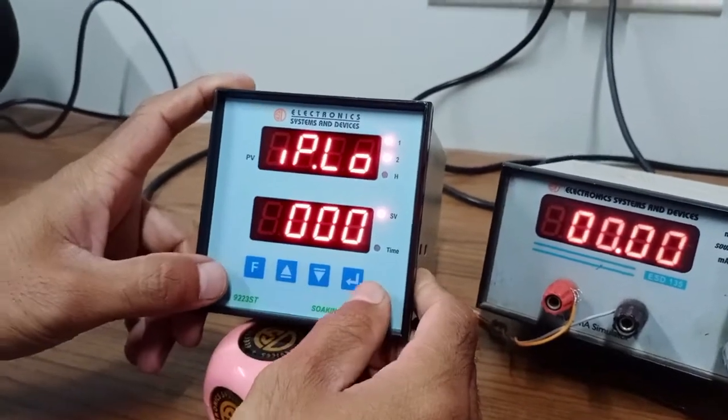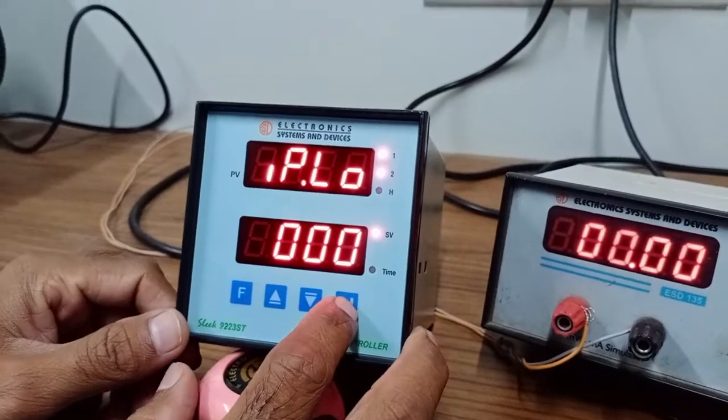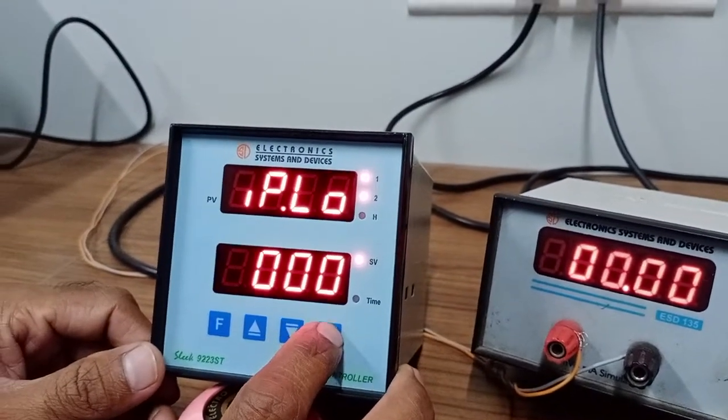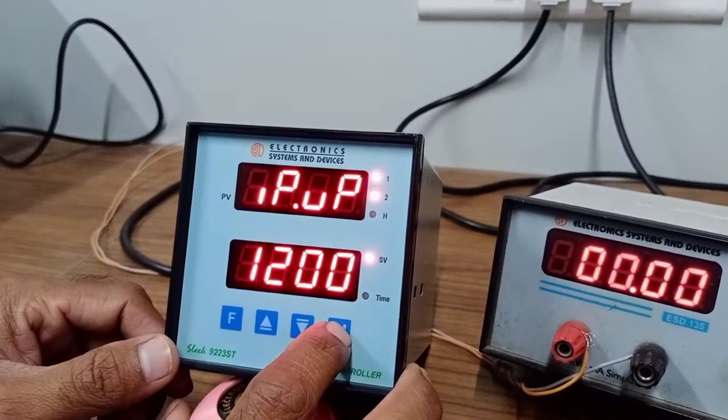Function. We will go to the settings mode. You have to press the up arrow and the function key. This is input lower limit. This is 0. Input upper limit 1200 for K-type thermocouple.